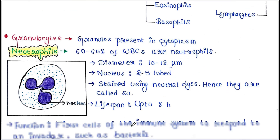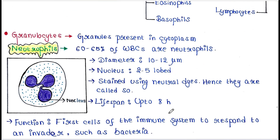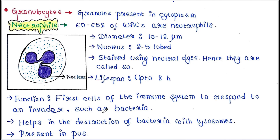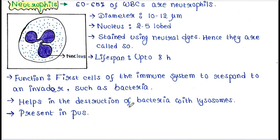Lifespan up to 8 hours. Function: neutrophils are the first cells of the immune system to respond to an invader such as bacteria. They help in the destruction of bacteria with lysosomes and they are present in pus.